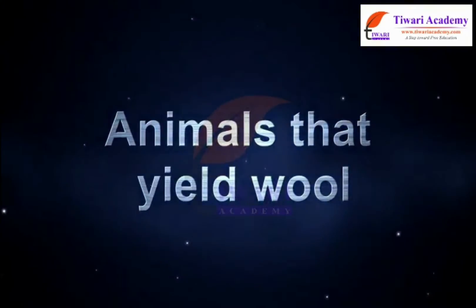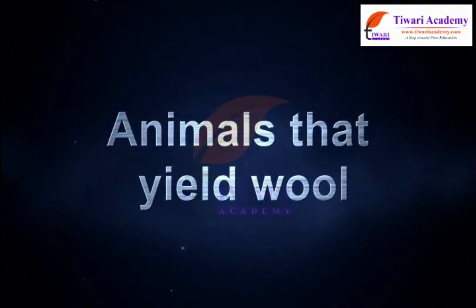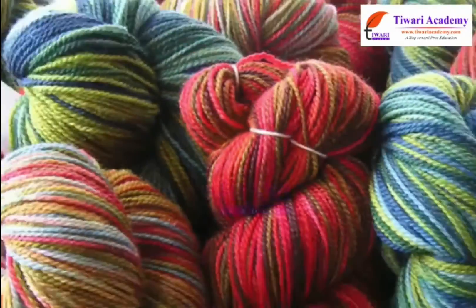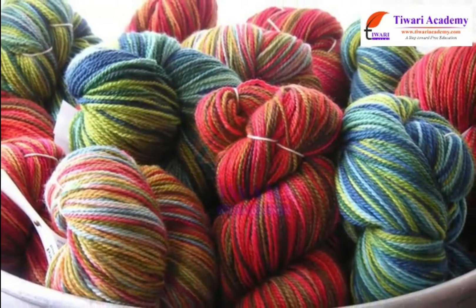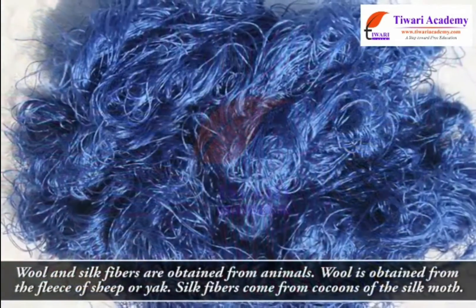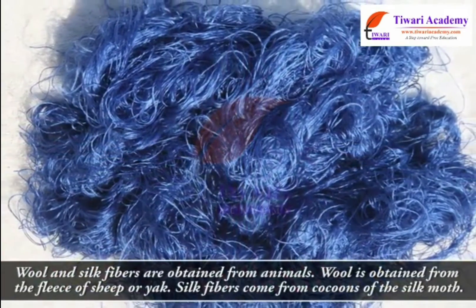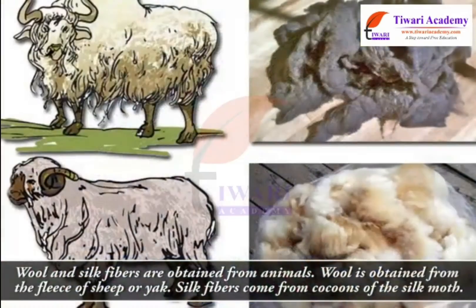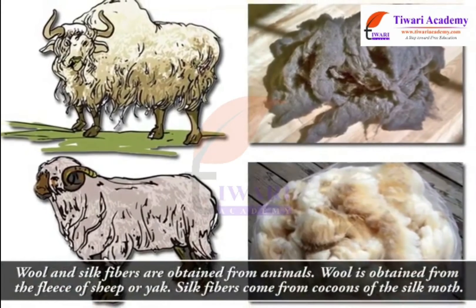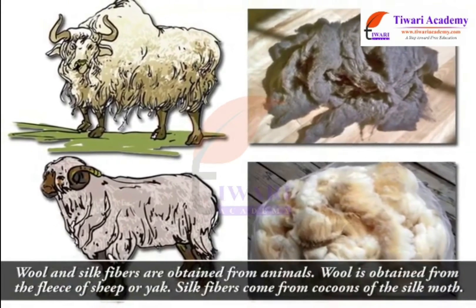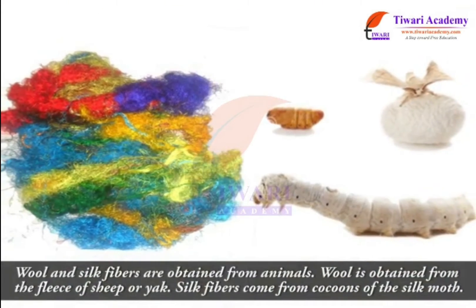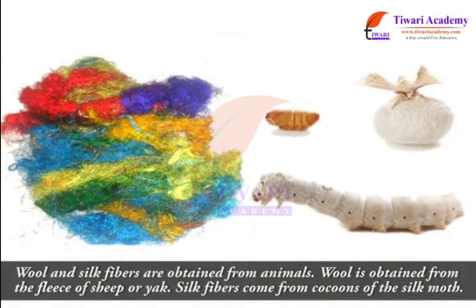Animals that yield wool. Dear kids, we all know that wool and silk are obtained from animals. Wool is obtained from the fleece of sheep or yak. Silk fiber comes from cocoons of the silk moth.